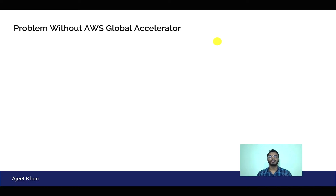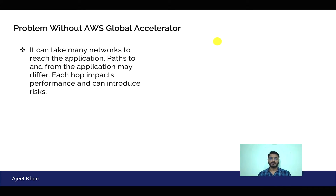Let's get started. First, let us see what problem we can face if we don't use Global Accelerator. Suppose our application is present on EC2 instances with an Application Load Balancer in front of it, serving users around the globe. The request from the client may reach our application by going through different networks and different hops in between. Each hop introduces latency and also introduces some risk.